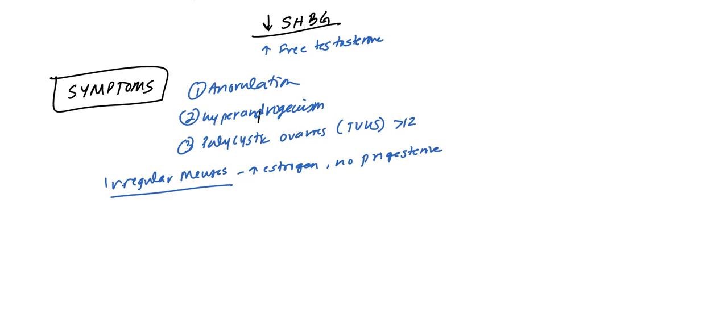But since there's no ovulation, they never have progesterone and you have estrogen unopposed. That leads to high levels of endometrial hyperplasia. The endometrium becomes really thick and eventually just from the sheer weight it starts to fall down and you have heavy irregular bleeding.